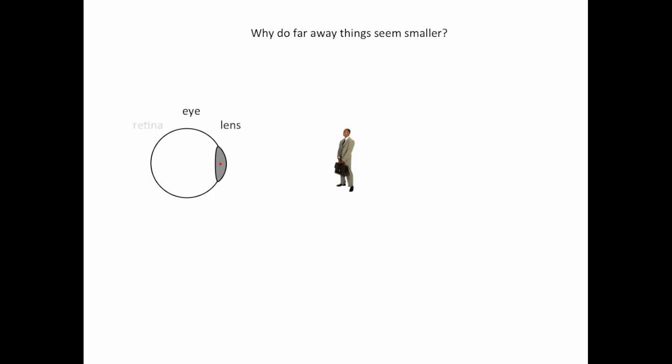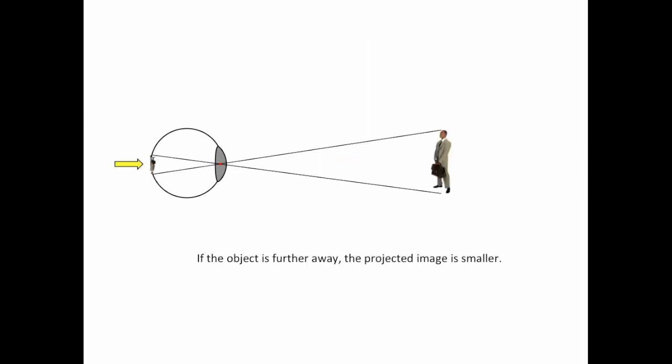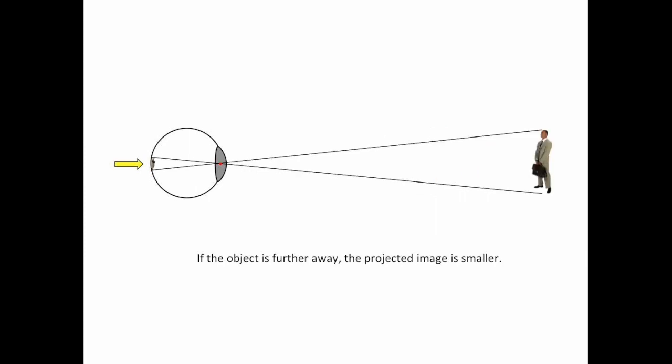Well, this should look familiar to you. This is a picture of a human eye. It has a lens on the front and a retina in the back. And what happens is, light from an object passes through the lens and projects an image on the retina. If the object is further away, the projected image is smaller. See that? Further away, the image on the retina becomes smaller. And further away, even more smaller.